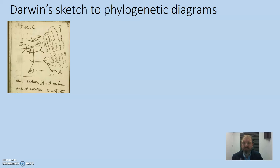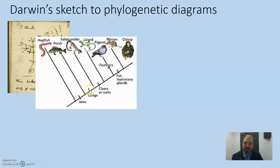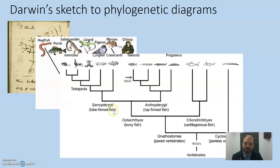Darwin was working in a time before genetics, so this was really based on morphological studies. As we increased our technology and understanding, different ways of representing these tree diagrams came about. Here is what we call a phylogenetic tree diagram, looking at different vertebrate species based on morphological characteristics and linking relatedness. You can see that the mouse and chimp have a common ancestor here, whereas the pigeon and chimp have a common ancestor further back, and the chimp shares a common ancestor with the fish — before the development of lungs in this evolutionary lineage.